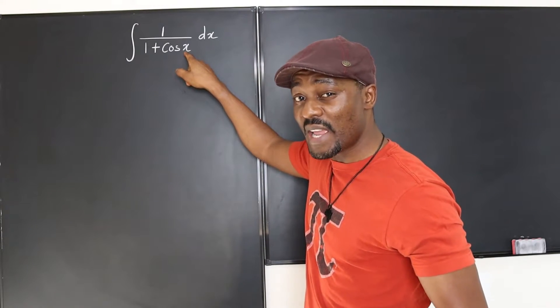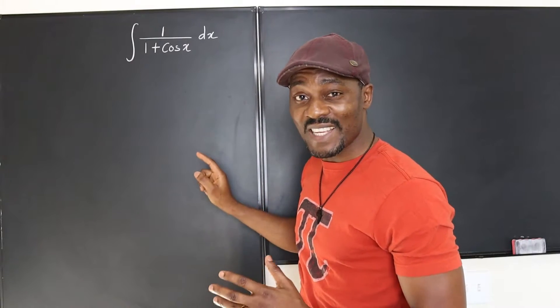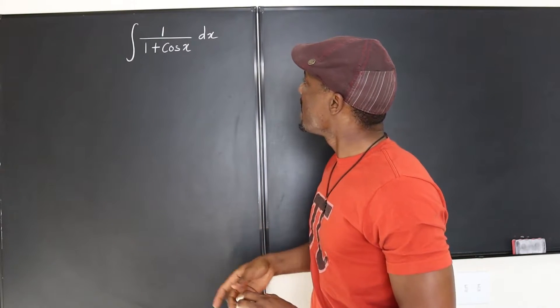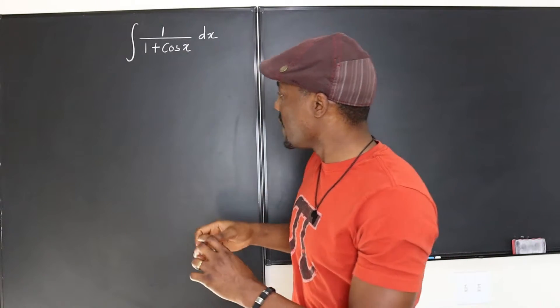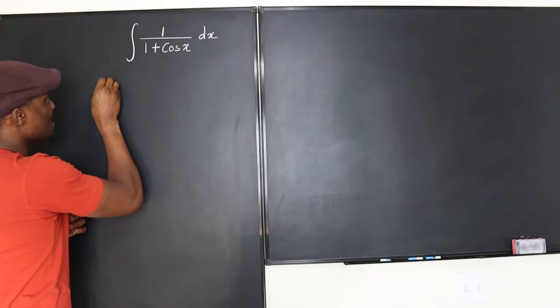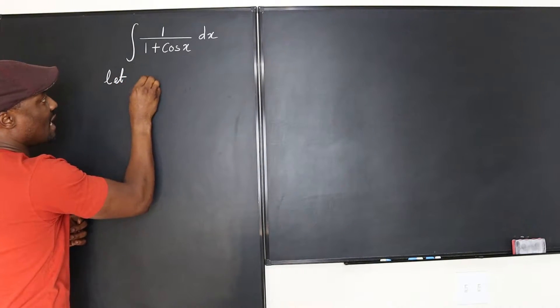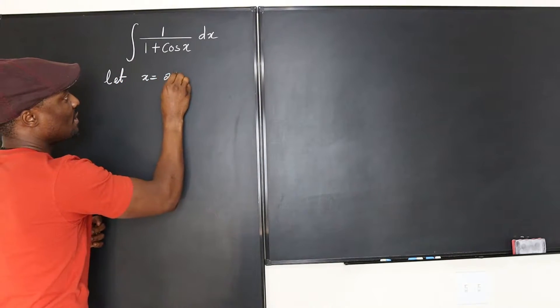And a very common way for integration techniques would be for you to say x is probably twice another angle, which will be, say, theta. So we can start with, say, let x be equal to 2 theta.